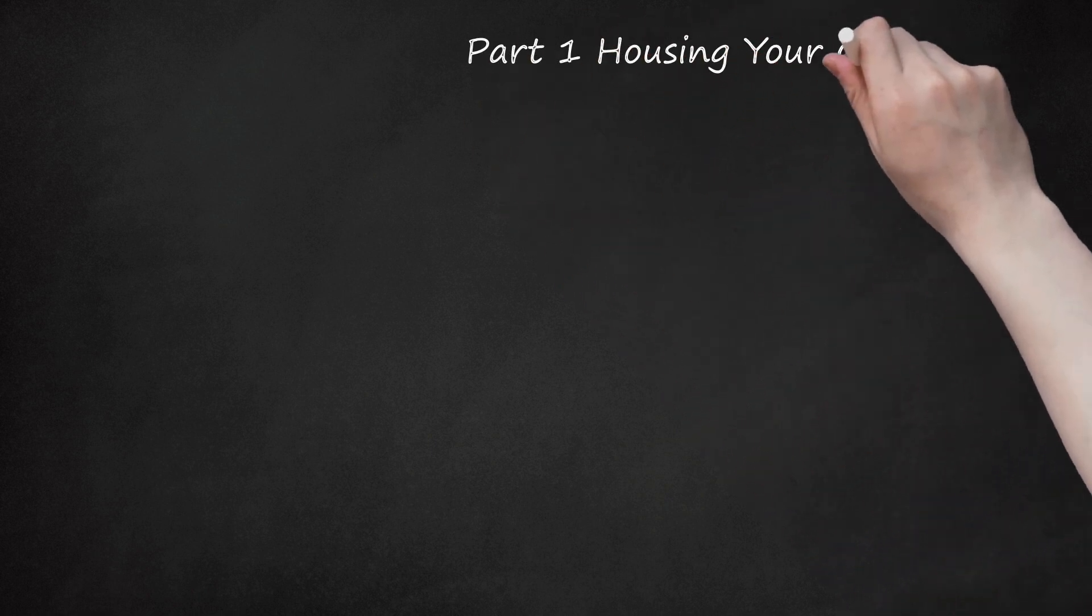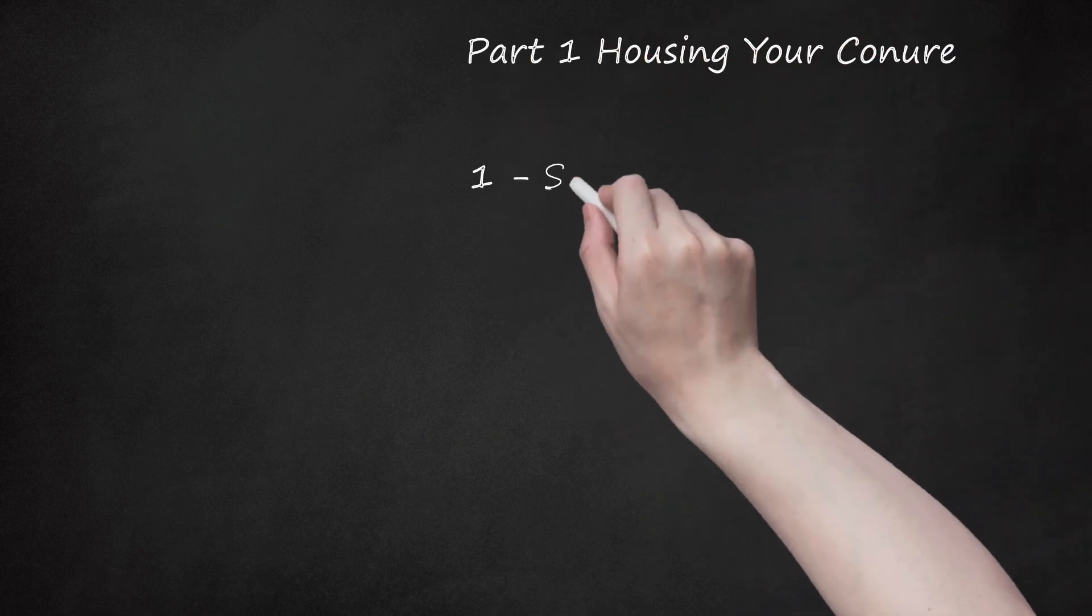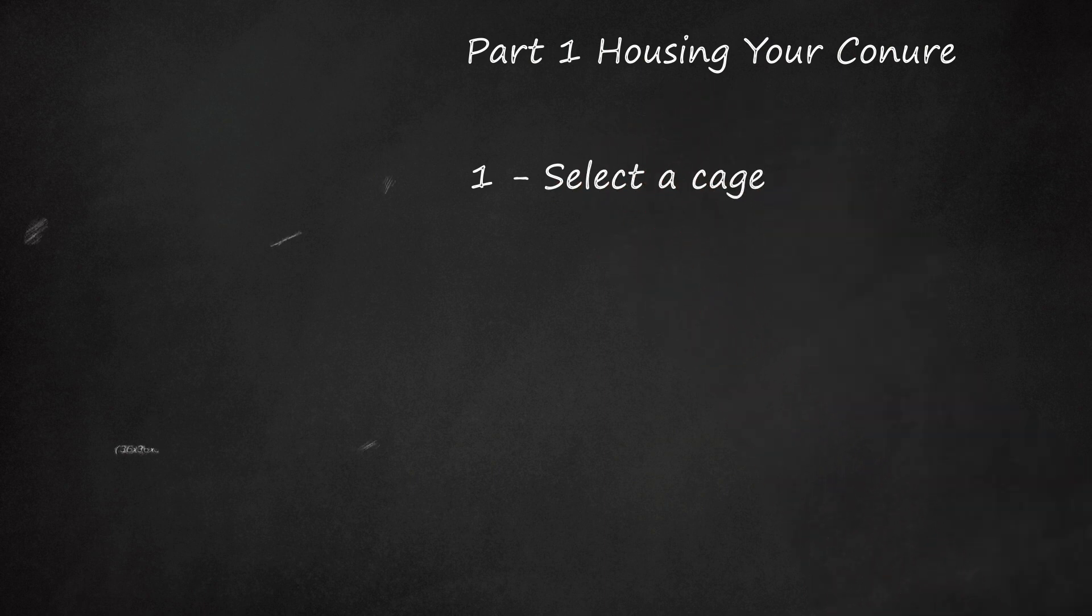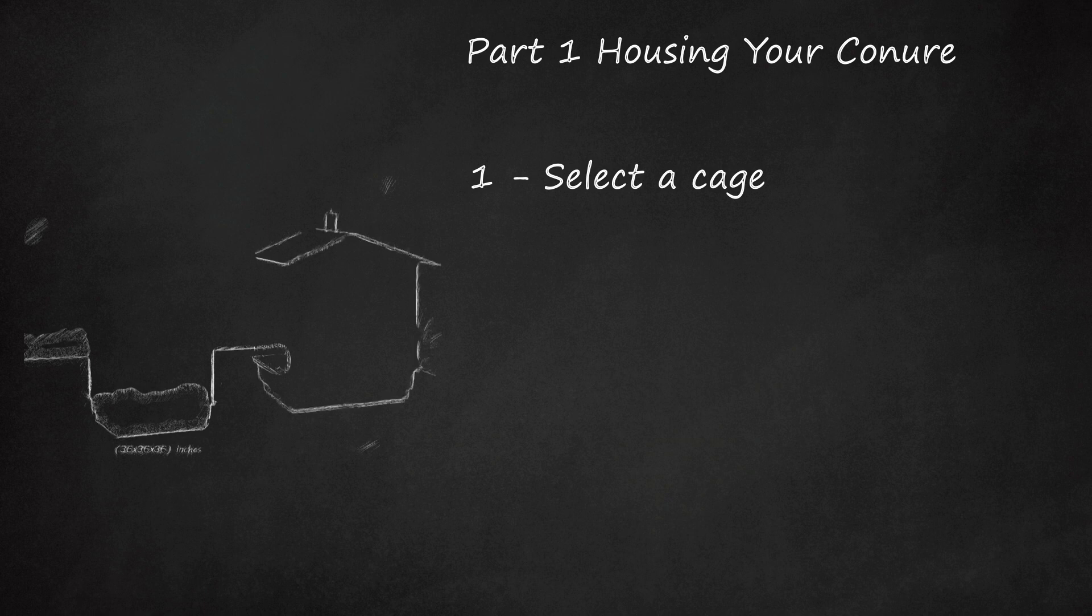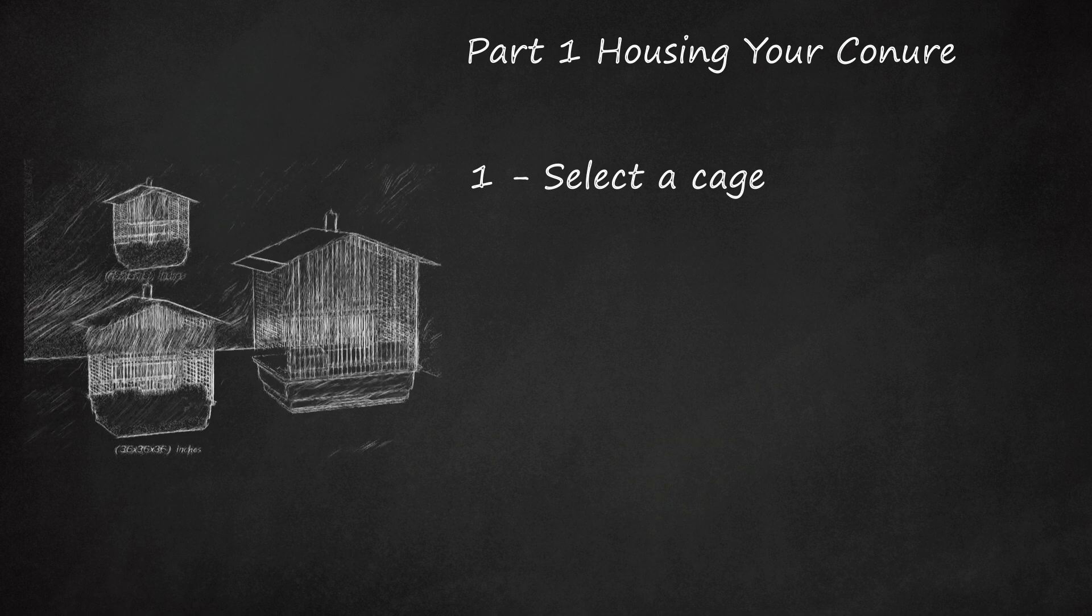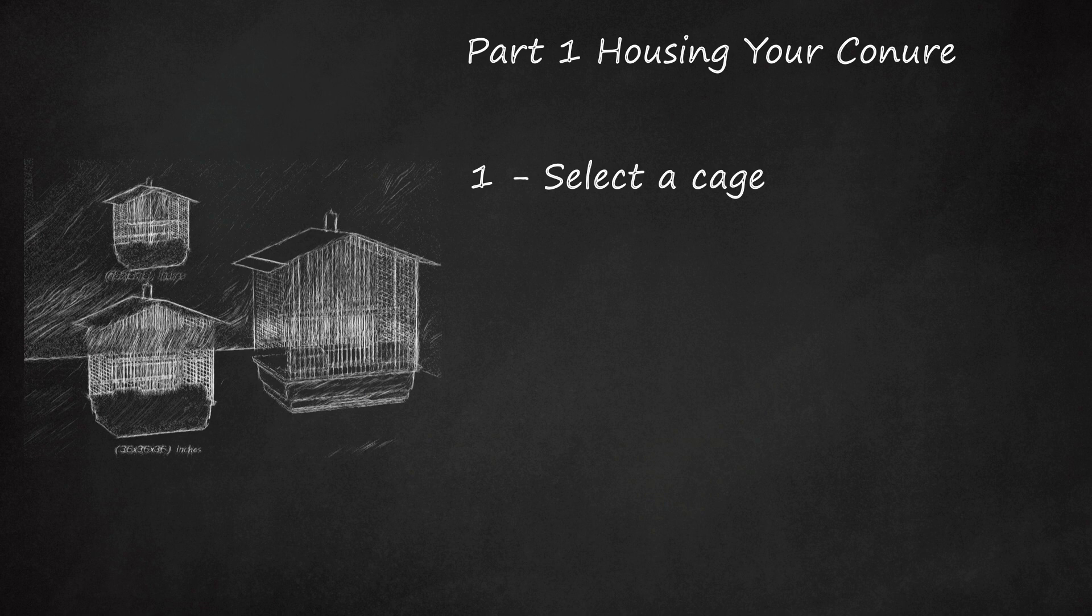Part 1: Housing Your Conure. Select a Cage. Conures are active birds that like to keep busy. Your conure will need a cage that gives him lots of space to move around and play with his toys. If you have a small conure, his cage should be at least 18 by 18 by 18 inches (46 by 46 by 46 centimeters). A larger conure would need a cage that is at least 36 by 36 by 36 inches (91 by 91 by 91 centimeters).